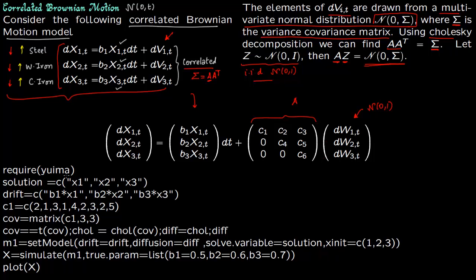So let us go through the R code. So you're going to require the package yuima. The solution is of three things x1, x2 and x3. So we are going to solve the future prices of steel, wrought iron and cast iron. So this is our solution set. This is our drift b1*x1, b2*x2, b3*x3. So I copied this right here.